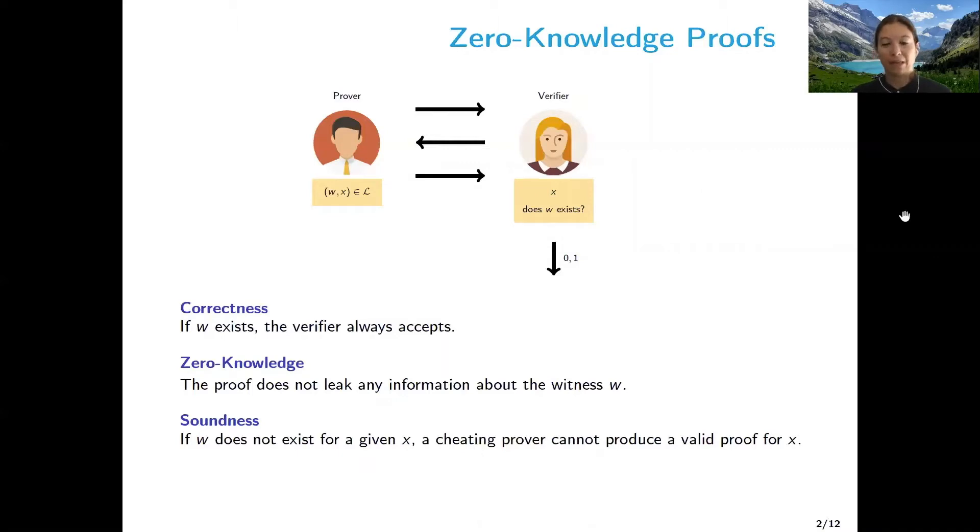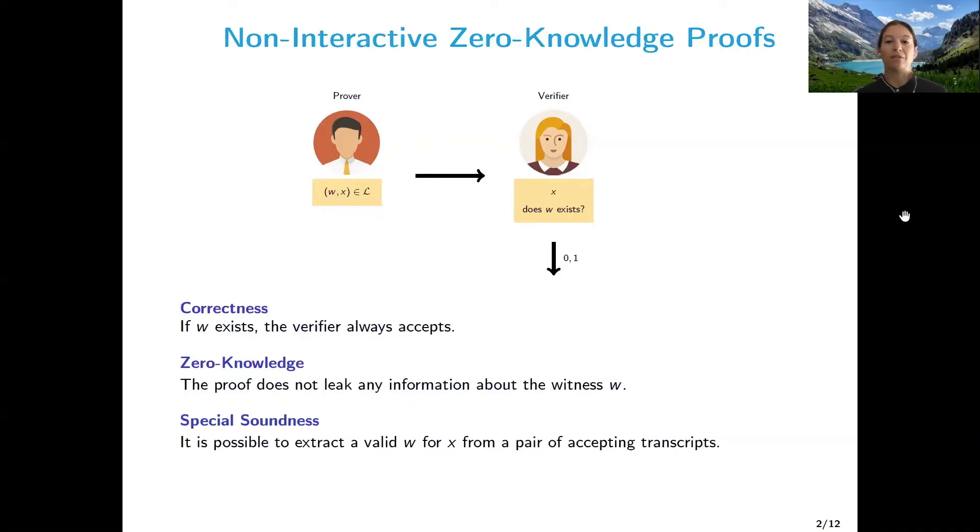However, the amount of interaction between the prover and the verifier might be restricted in some applications. And that's why we have non-interactive zero knowledge proofs, which are proofs that only have one round of interaction where the prover essentially sends the transcript to the verifier, which then verifies it and outputs zero or one. And these can also be asynchronous. And in particular, we require from these proofs not soundness, but something called special soundness. So we want that it's possible to extract a valid witness from two accepting transcripts for the same public instance X.